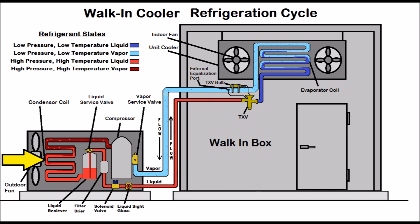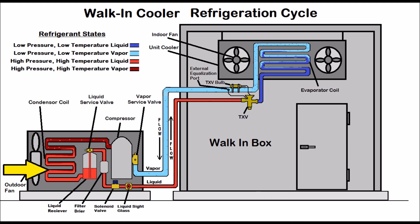There is no temperature change once it hits the saturated state. It continues to reject heat until it turns into a complete liquid. Then the liquid refrigerant lowers in temperature as it rejects heat and turns into a sub-cooled liquid. Sub-cooling is the temperature decrease in liquid form — specifically the temperature difference between where it comes out of the saturated state as a complete liquid and where it enters the liquid receiver.